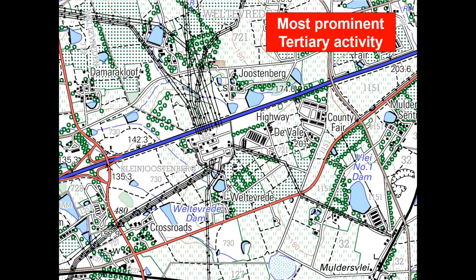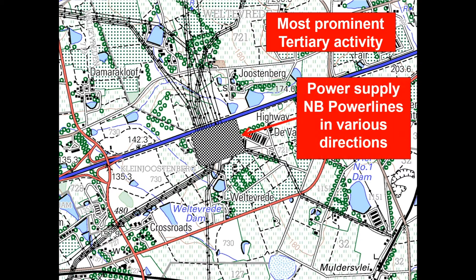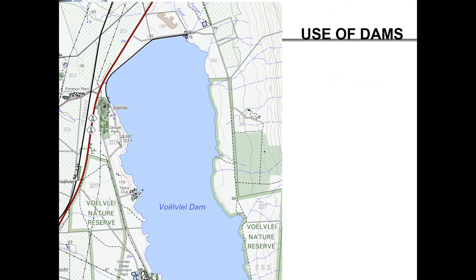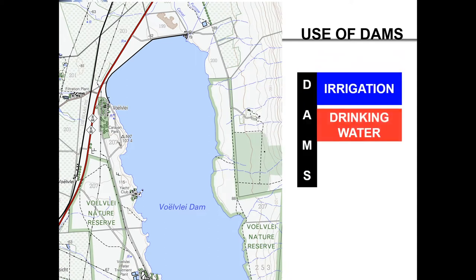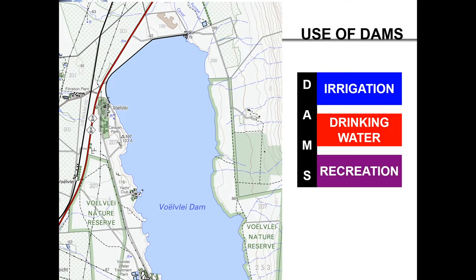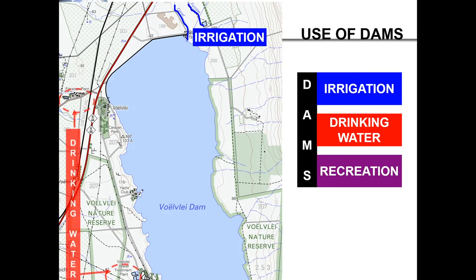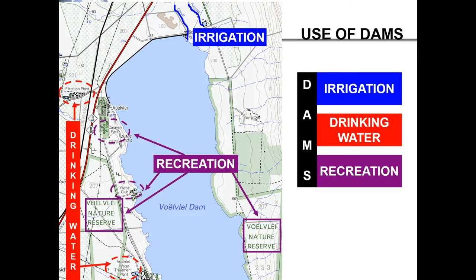You can be asked to identify the most prominent tertiary activity in an area. If you look at this extract, there are many power lines going off in various directions — therefore power supply will be your answer. When looking at the use of dams: dams can be used for irrigation, drinking water, and recreation. In this extract, irrigation is shown by the canal or furrow, we have a filtration plant and water treatment plant indicating drinking water, and we have a caravan park next to the dam as well as a nature reserve.